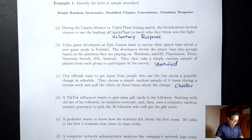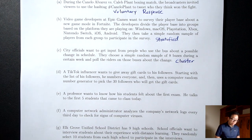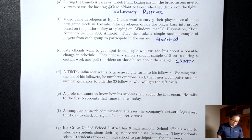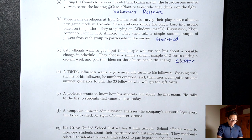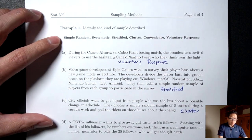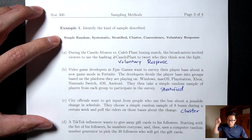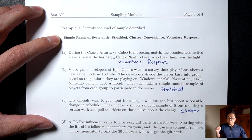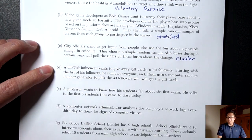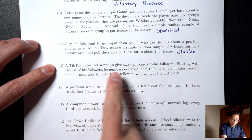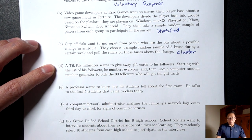Part D: A TikTok influencer wants to give away gift cards to his followers. Starting with the list of his followers, he numbers everyone and then uses a computer random number generator to pick the 30 followers who get the gift cards. That sounds exactly like one of the examples I gave for simple random — number everybody, then use a random number generator to pick. This is simple random.